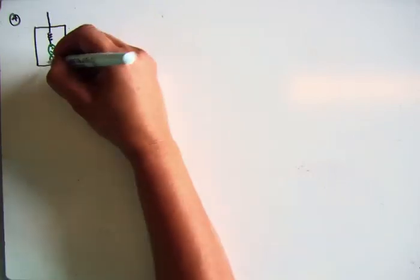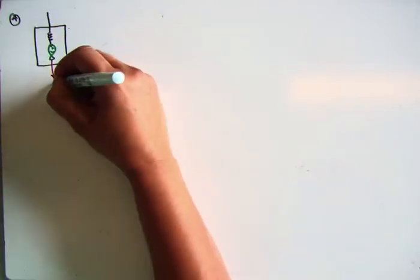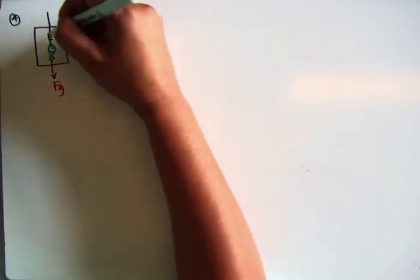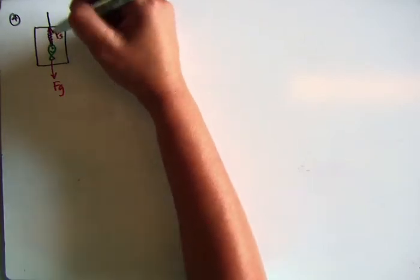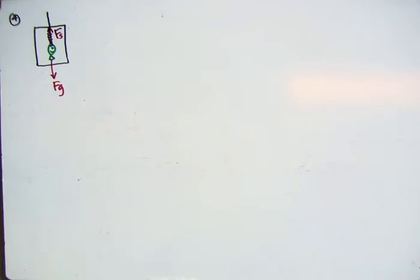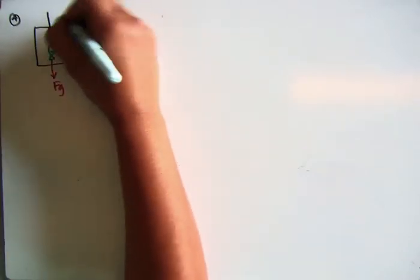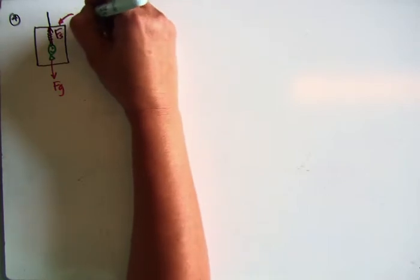You can call it whatever you want, but essentially, the fish has a force of gravity pulling it down, and it has this force of the spring pulling it up. In this case, since that's the force that the spring has, that's the thing we're going to use for apparent weight.